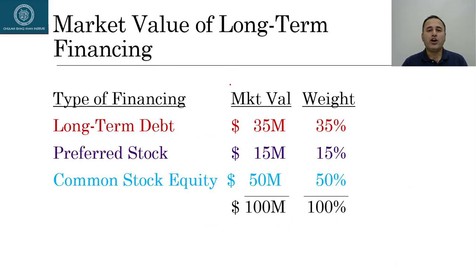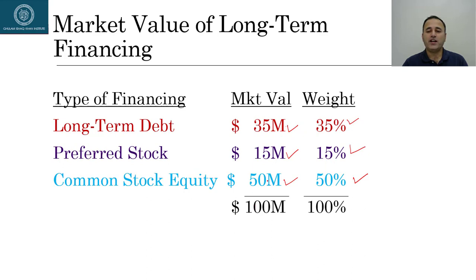Whenever we talk about long-term financing, we talk about long-term debt, preferred stock, and common stock equity. Suppose a company has $35 million in long-term debt, $15 million in preferred stock, and $50 million in common stock equity. The weights are: 35%, 15%, and 50% respectively. To calculate the overall cost of capital, we first individually identify the cost of debt, cost of preferred stock, and cost of common stock, then apply those weights to calculate the weighted average cost of capital.